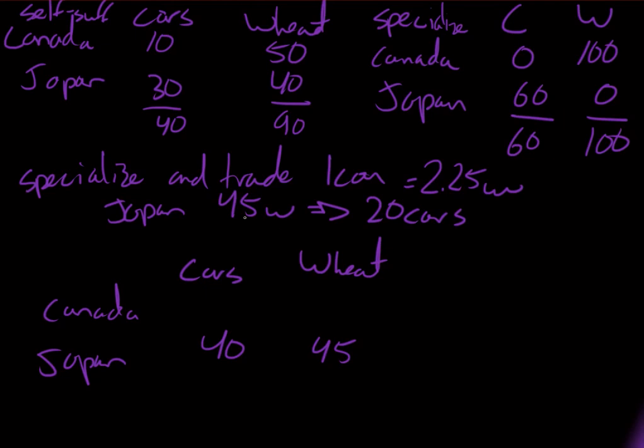Well, to give up these 45 units of wheat, it got 20 cars. It wasn't producing any, so it gets 20 cars. And it was producing 100 units of wheat. It gave up 45, so it has 55 left. Canada also has more cars and more wheat than before. To make sure this has worked out, I look at the totals from specialization with no trade: 60 and 100. This is what I have again now, but after some relocation. So we can see it's better off for both.